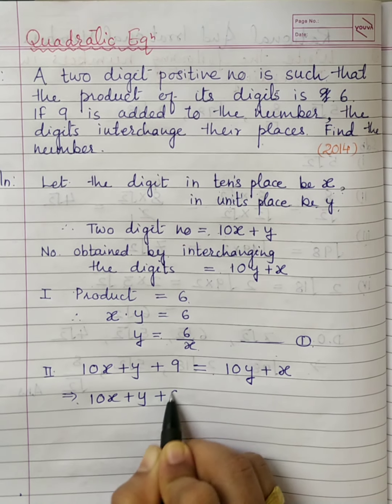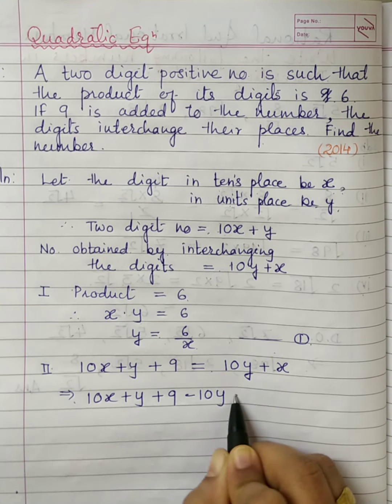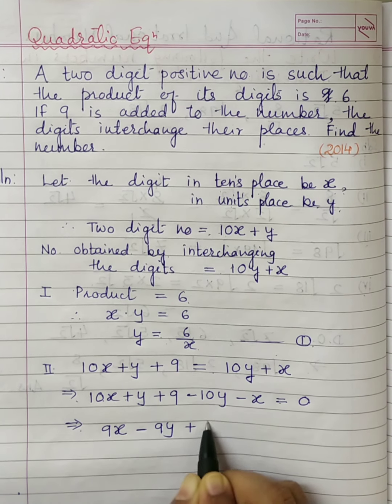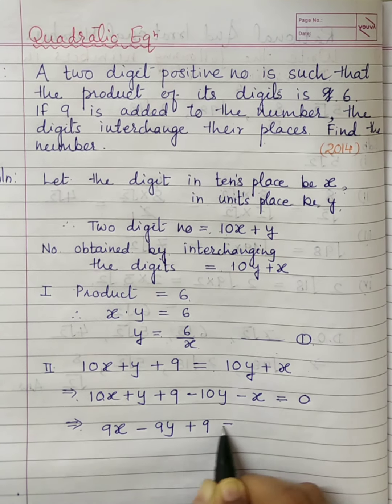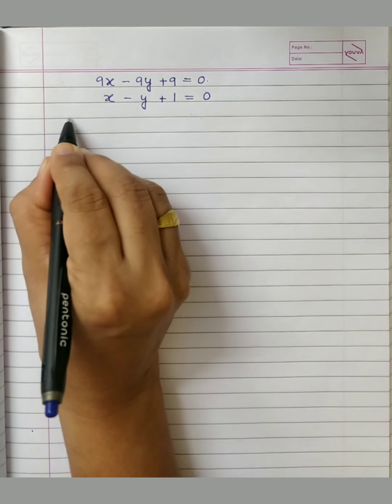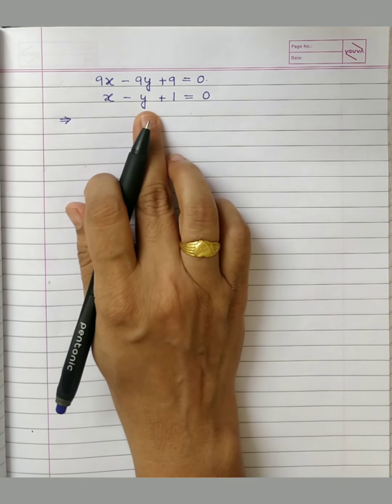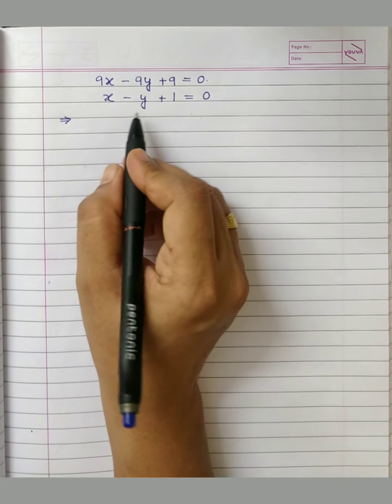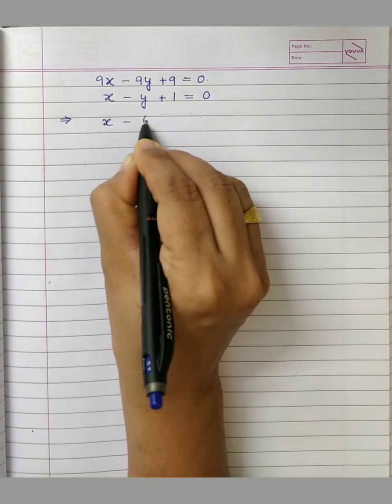Simplifying: 10x + y + 9 = 10y + x. Rearranging: 9x - 9y + 9 = 0. Dividing throughout by 9 gives x - y + 1 = 0. Now we substitute the value of y from equation 1. Since y = 6/x, we replace y here to get the equation in one variable.